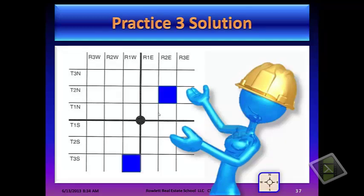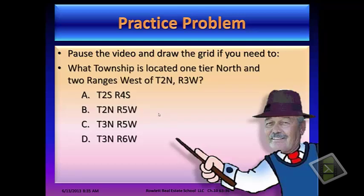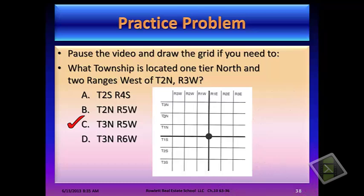Here's the answer — I hope you were able to find that. Pause the video and draw a grid if you need to. What township is located one tier north and two ranges west of T2 north and R3W? The answer is T3 north and R5W. It kind of went off our grid here, but if you draw the grid out or just do some addition in your mind, you may have been able to get this.